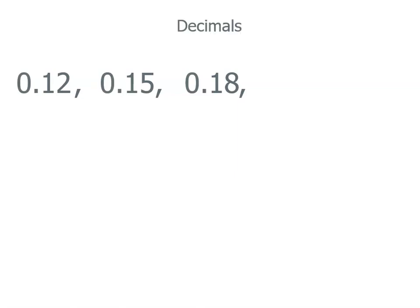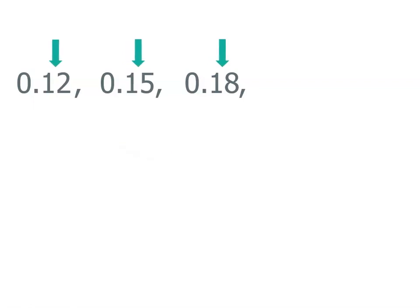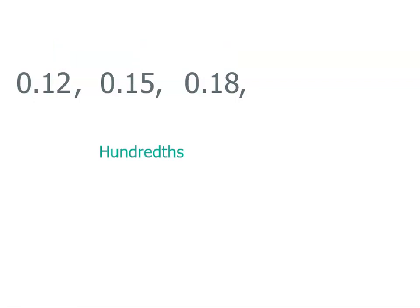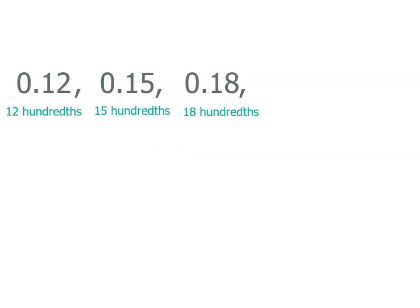Now we've gone back to our decimals. Each of these numbers has a digit in the tenths place and a digit in the hundredths place, so these are hundredths. If we think of what they are, we've got 12 hundredths, 15 hundredths, and 18 hundredths. So now you might be able to spot the pattern — each number is 3 more hundredths than the number before.